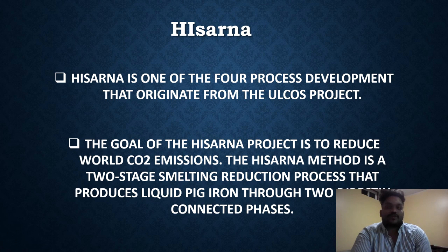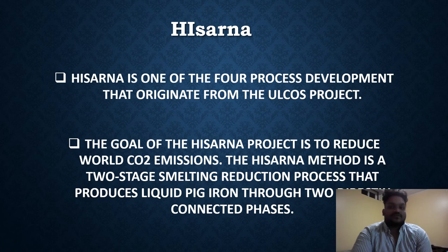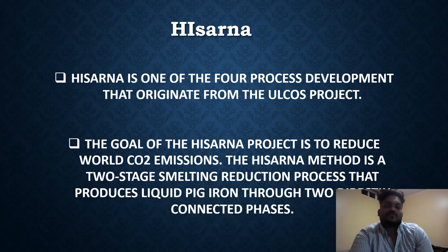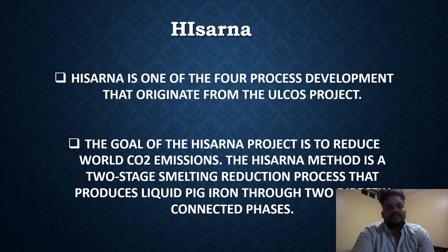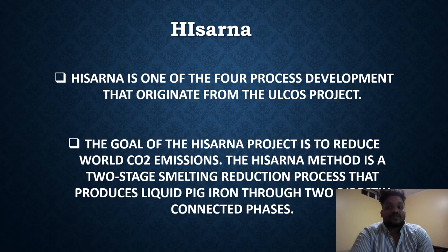Steel is known to be the most recycled industrial material. The main objective of the European Union is to reduce emissions by 80% to 90% from 1990 levels by 2050. The goal of the HIsarna project is to reduce world CO2 emissions. The HIsarna method is a two-stage smelting reduction process that produces liquid pig iron through two directly connected phases.